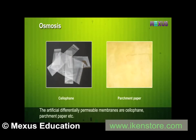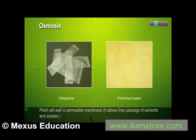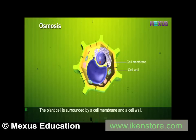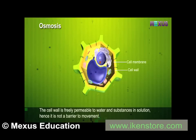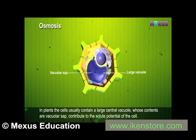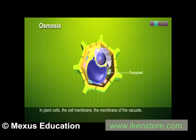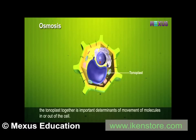All living membranes are differentially permeable. Artificial differentially permeable membranes include cellophane and parchment paper. The plant cell wall is a permeable membrane that allows free passage of solvents and solutes. The plant cell is surrounded by a cell membrane and a cell wall, which is freely permeable to water and substances in solution. In plants, cells usually contain a large central vacuole whose contents (vacuolar sap) contribute to the solute potential of the cell. The cell membrane, the membrane of the vacuole (tonoplast) together are important determinants of movement of molecules in or out of the cell.